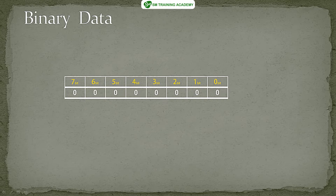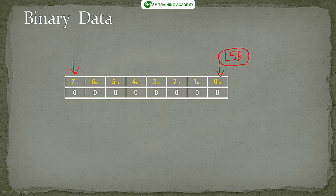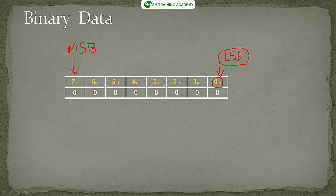Binary data is represented as a set of bits. The minimum set of bits for binary data is eight bits, starting from bit zero (the rightmost) to bit seven (the leftmost). The bit on the extreme right is the Least Significant Bit (LSB) and the bit on the extreme left is the Most Significant Bit (MSB). You can also have 16-bit, 32-bit, or 64-bit numbers based on user requirements.